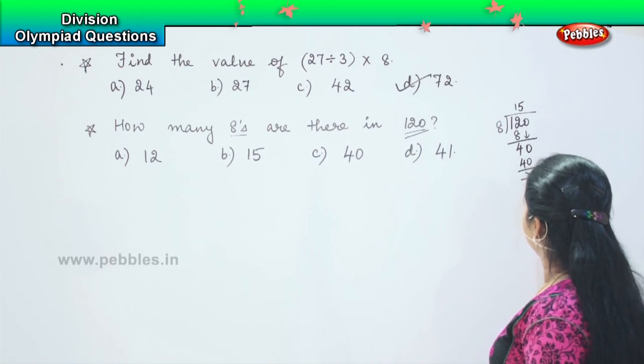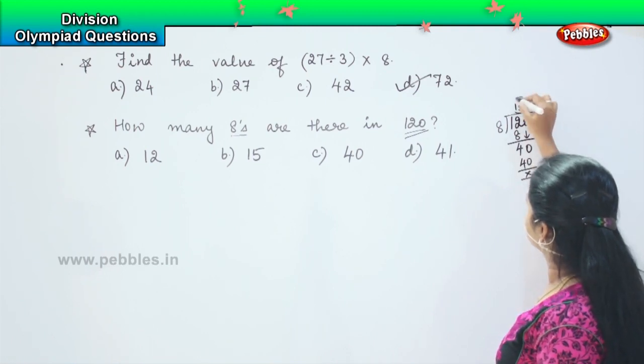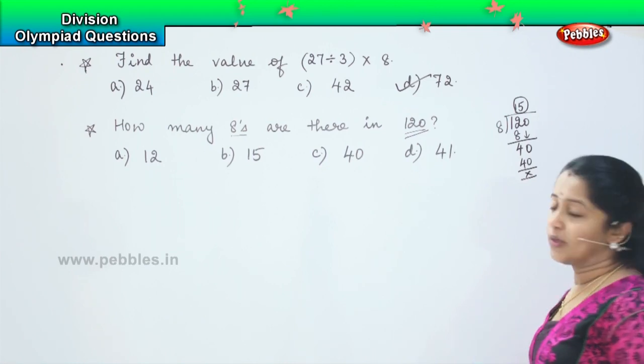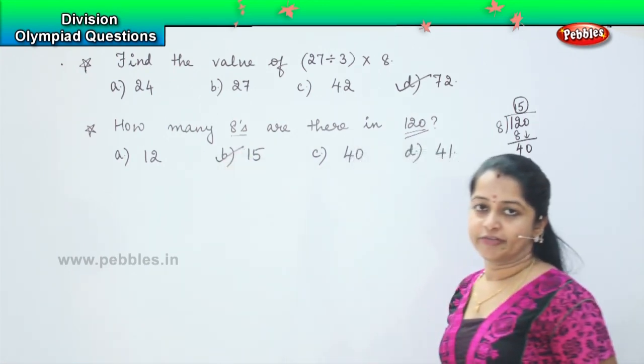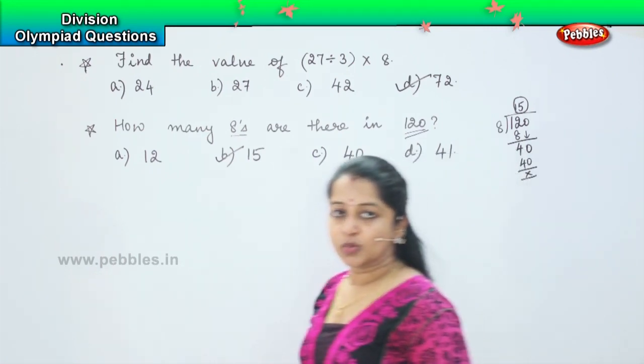So 8 5's are 40. So my answer is 15. So how many 8's are there in 120 children? It is option B, 15. Got it? Shall we move to the next one?